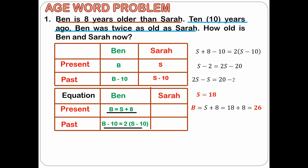Therefore, the age of Sarah at present is 18 years old, while Ben's age at present is 26 years old. So the expression in the problem that Ben is 8 years older than Sarah at present is correct, because Sarah is 18 years old while Ben is 26 years old.